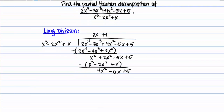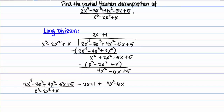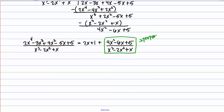So we can say that our original rational expression equals the polynomial we just found — 2x plus 1 — plus the remainder written as a fraction: 4x squared minus 6x plus 5 over the original denominator x cubed minus 2x squared plus x. Notice that this new rational function with my remainder is now proper — the degree of the numerator is less than the degree of the denominator — so I can use partial fractions on it. We'll set aside 2x plus 1 for a few minutes and focus on the partial fraction decomposition of this rational function.